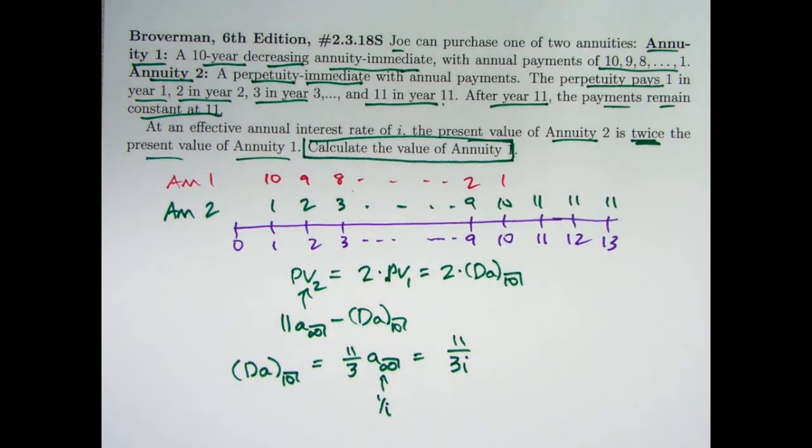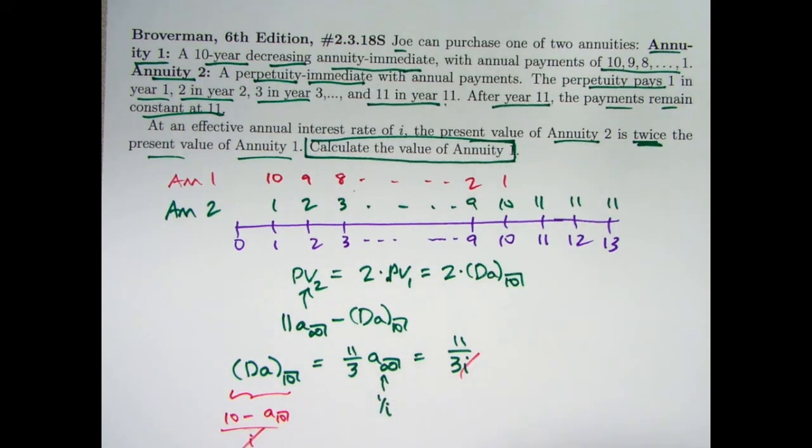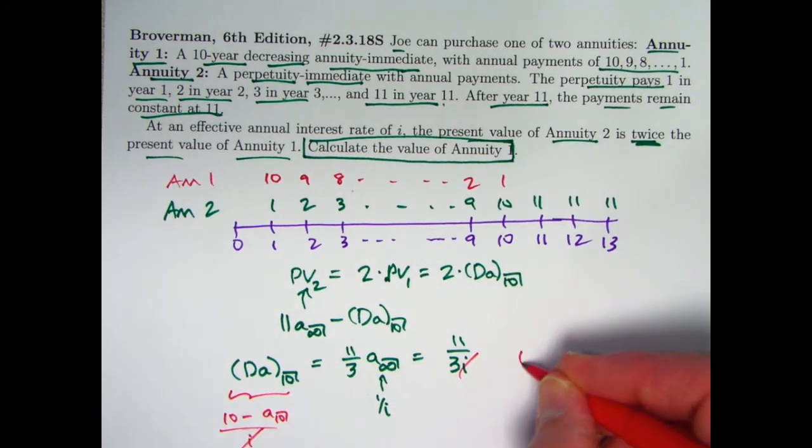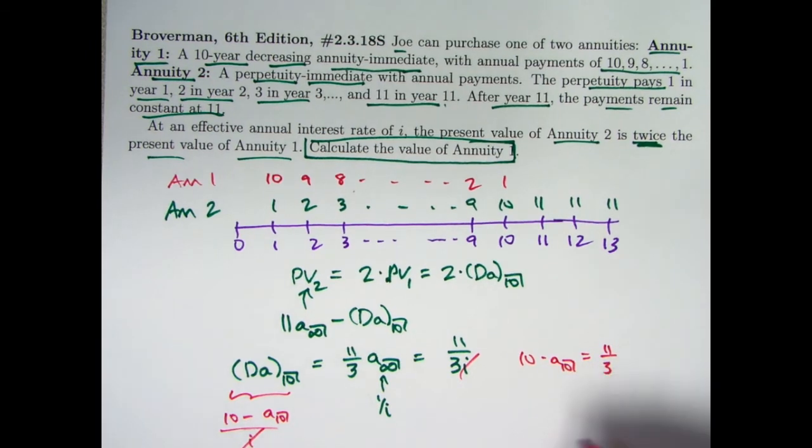We can also now use the formula for the present value of a decreasing annuity as n, the number of payments, minus A_n, A sub 10, the present value of a level annuity immediate, divided by i. The i's now can cancel and you're left with the equation 10 minus A 10 equals 11 thirds, which we can solve for A 10.